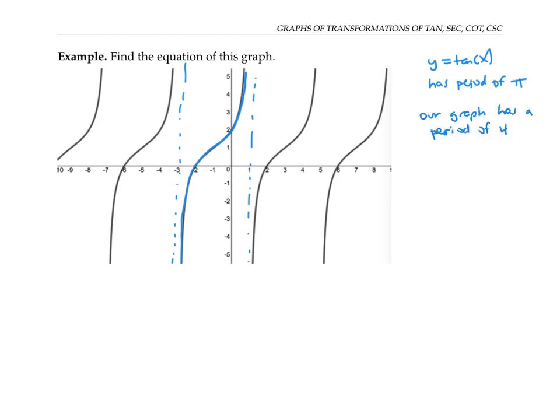So our graph might be something more like tan of bx, where pi over b has to be four. That means that pi equals four b.